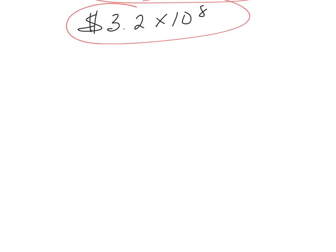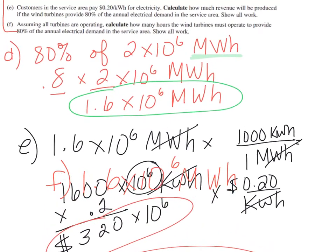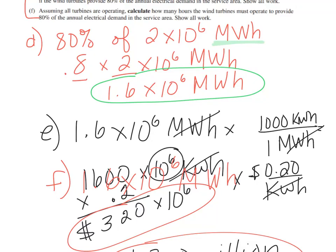Going on to F: assuming all turbines are operating, calculate how many hours the wind turbines must operate to provide 80% of the annual electrical demand in the service area. Show all work. First, we need to use that answer again from letter D. Here's the thing: there's no double jeopardy in APES.